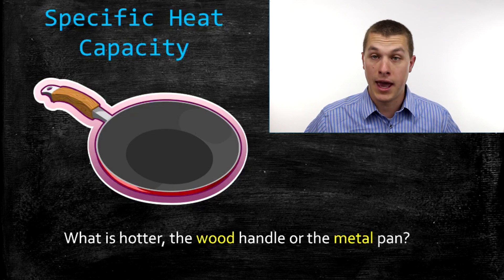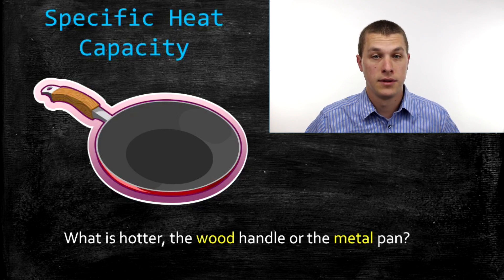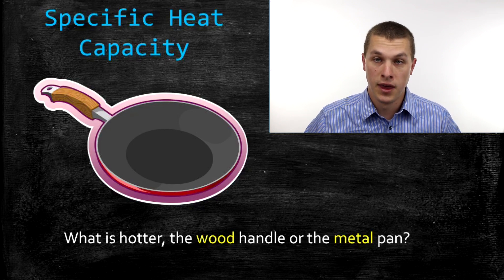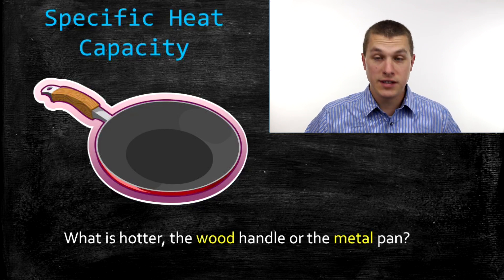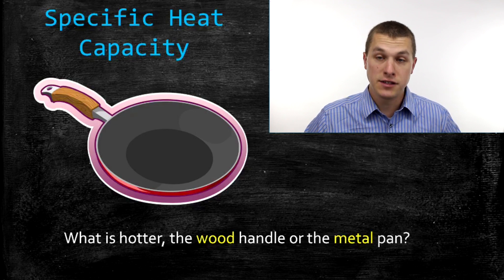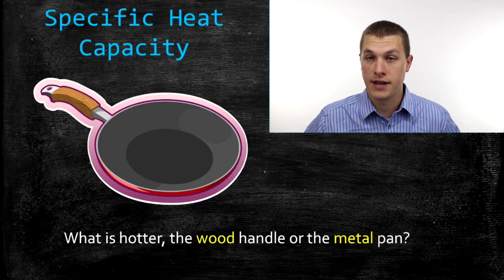If you take a look at this pan sitting on the stove, what do you think is going to be hotter — that wooden handle or the metal? We all know the answer is the metal. You don't want to touch the metal; you'd much rather touch that wooden handle. That's why the wooden handle is there.